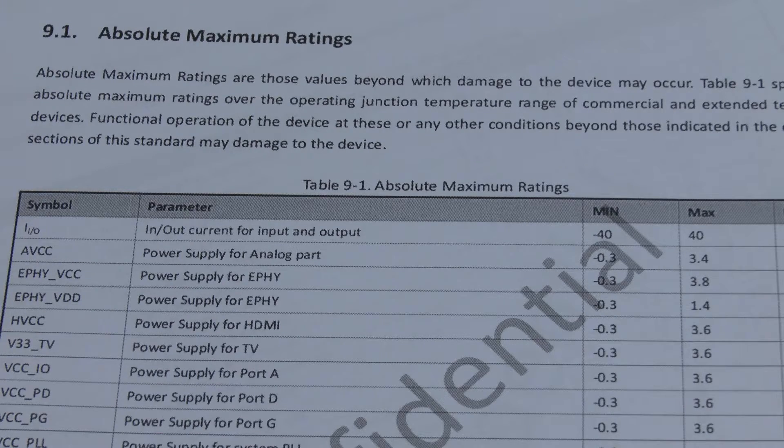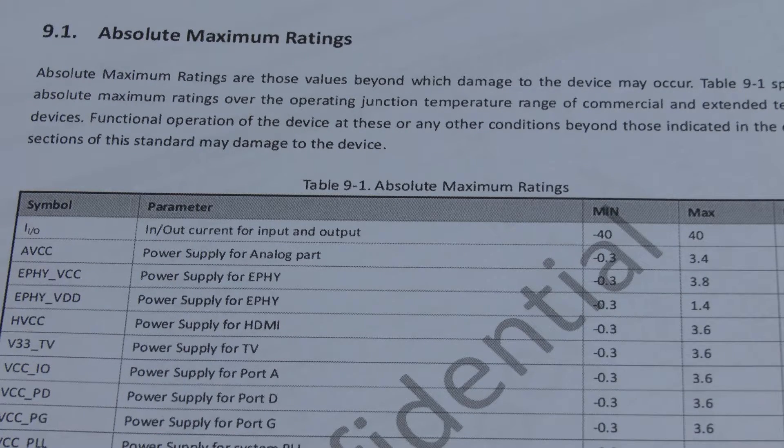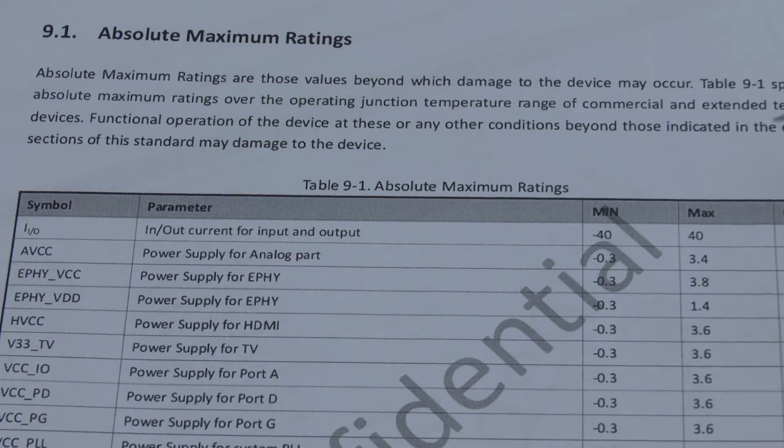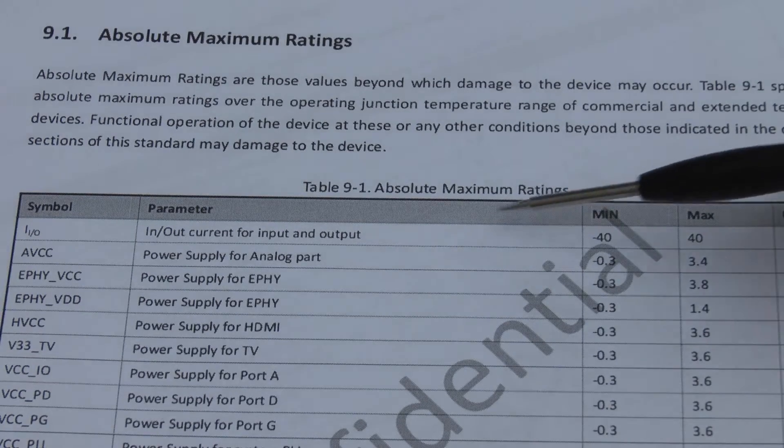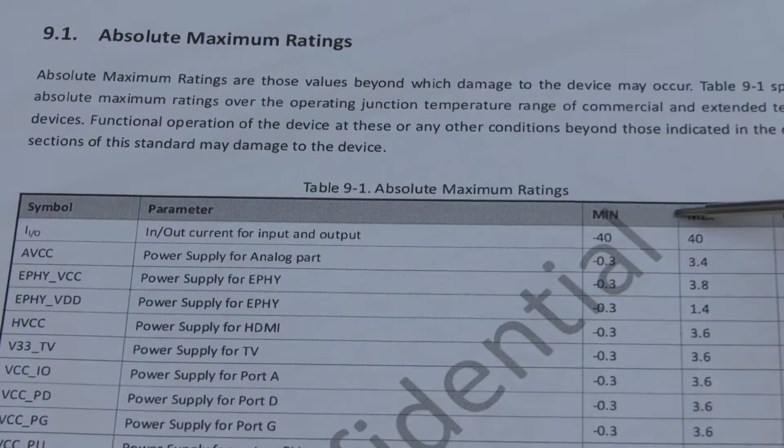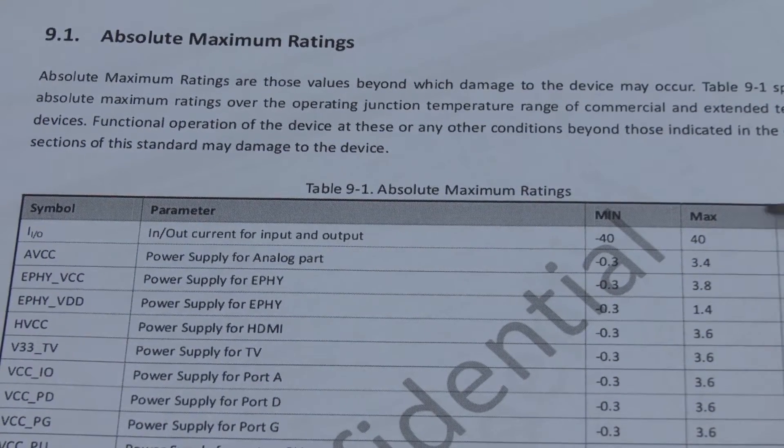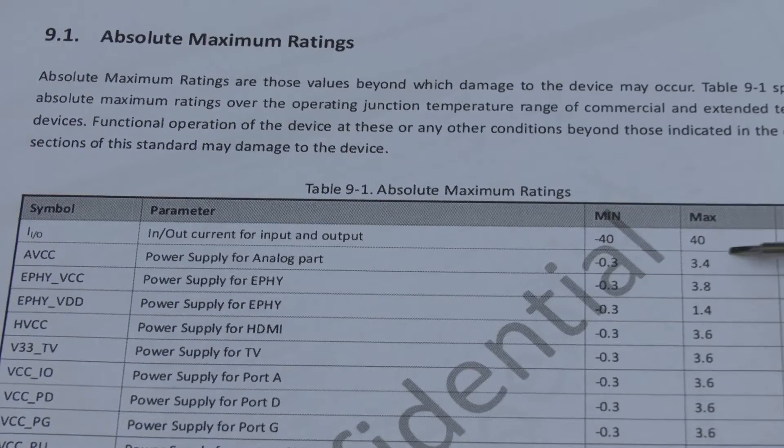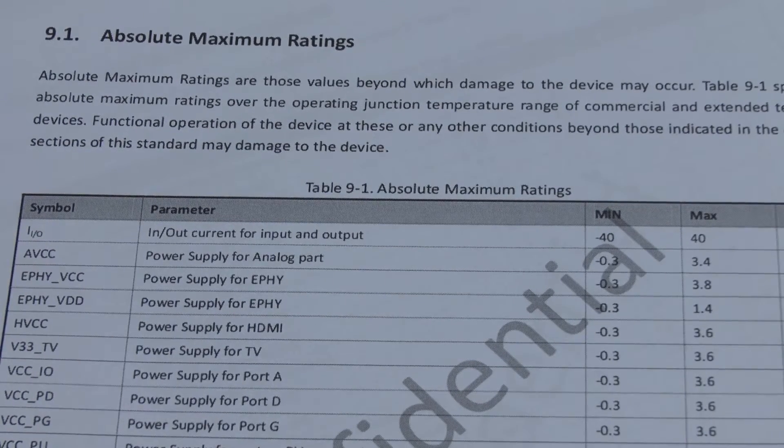Microcontrollers, especially very advanced ones, such as the ones from Allwinner, are quite whiny about the power situation. You see here, the input and output current for the ports, all in all, is specified at a maximum of 40 mA.